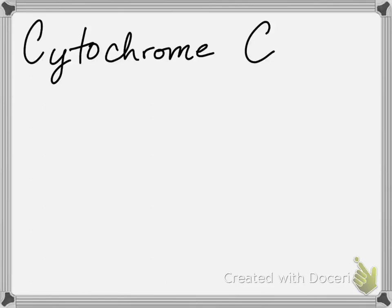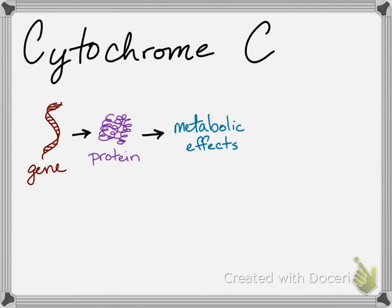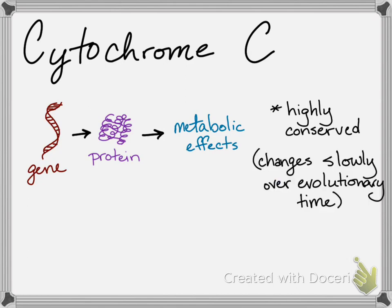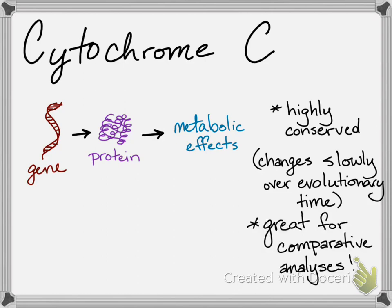Cytochrome C is one source of genetic information we use to build phylogenetic trees. It's the name for both a gene and a protein, and the protein is involved in metabolism. It's highly conserved, meaning it's so important that most mutations to this gene result in organisms that die. So, largely, over thousands of years, it's the same. Genes like this are great sources for comparative information.